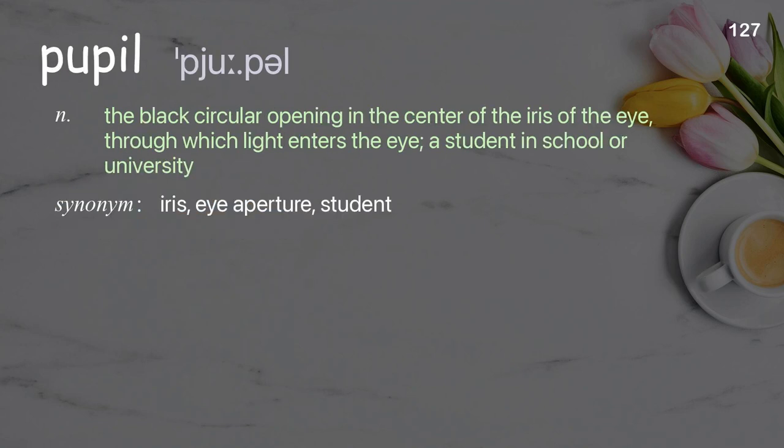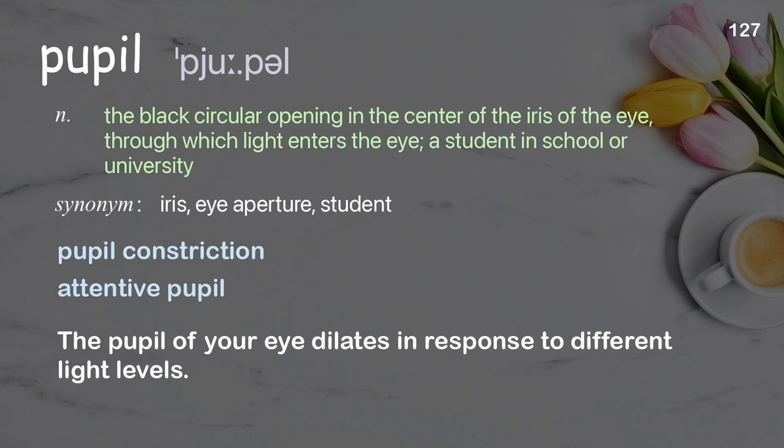Pupil: the black circular opening in the center of the iris of the eye, through which light enters the eye; a student in school or university. Examples: pupil constriction; attentive pupil; the pupil of your eye dilates in response to different light levels.